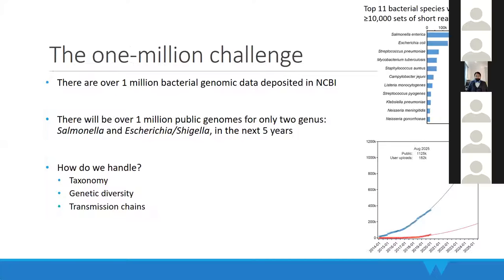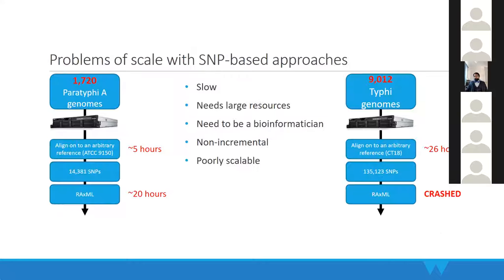That leads to the question I summarize as the 'one million challenge.' There are already over one million bacterial genomes in NCBI, and as you can see in the figure, several species already have over 100,000 genomes. In the next five years we expect over one million public genomes for just two species — Salmonella and E. coli — and other species will likely catch up. So we have enormous amounts of data. How can we handle taxonomy, analyze genetic diversity, and trace transmission chains?